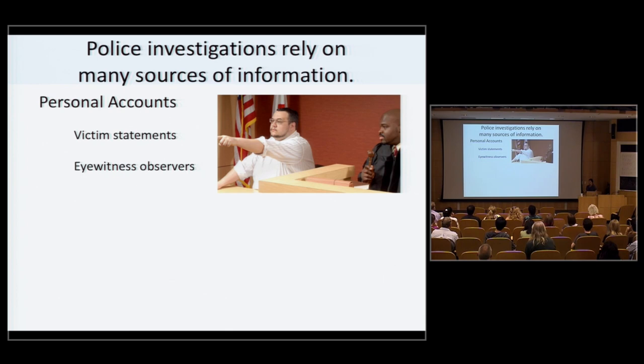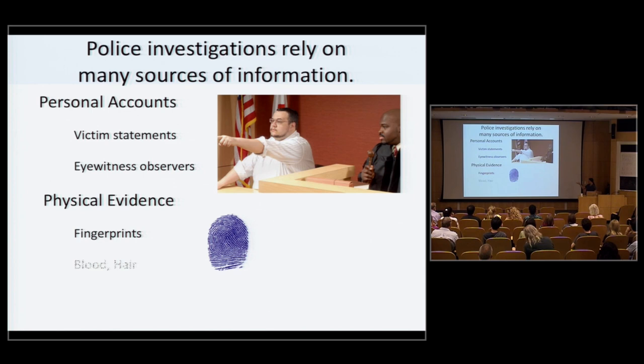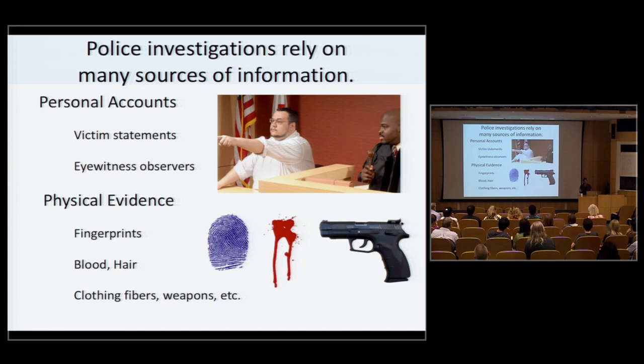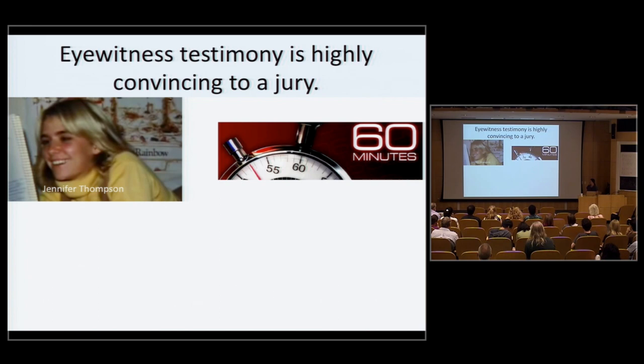Let's step back and think about what methods police use to investigate crimes. First and foremost, they get eyewitness accounts — they ask victims and get personal statements. And when it's available, they use physical evidence such as fingerprints, blood, hair, clothing, fiber, and weapons. I'll go through a few cases, starting with personal accounts, to give examples of how sometimes these efforts work and sometimes they don't.